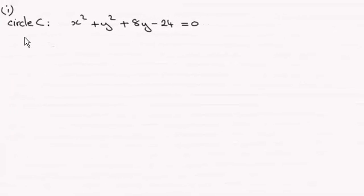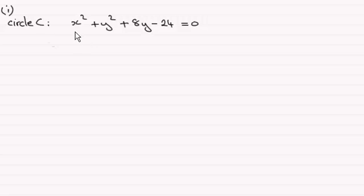Hi there. For this part of the question, we're given that circle C has the equation x squared plus y squared plus 8y minus 24 equals 0. What we've got to do is find the center of the circle and the radius.